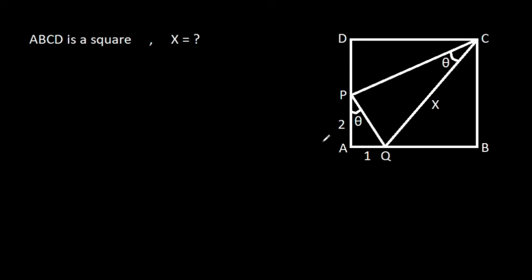In this video, we have been given that ABCD is a square and angle APQ is theta, angle PCQ is theta, AP is 2, AQ is 1, and CQ is x. We have to find x.